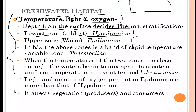The lower zone, the hypolimnion, is the coldest where all the decomposers are present. The upper zone, the epilimnion, is where marine organisms such as fish are present, as they receive proper sunlight and oxygen. In the lowest zone there is no penetration of sunlight, so no marine organisms can survive there — only decomposers.